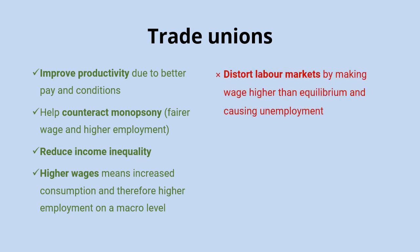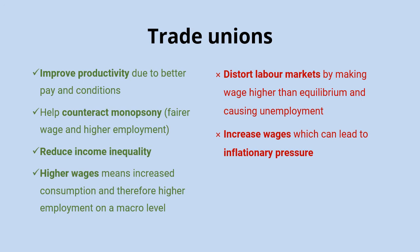The main disadvantage of trade unions, as seen in the competitive labour market diagram, is that pushing wages above equilibrium distorts market processes and causes unemployment. Even though higher wages are secured for members, unemployment is a significant downside. At a macro level, wage increases could lead to a wage-price spiral and increases in inflationary pressure, which are bad for the economy in general.